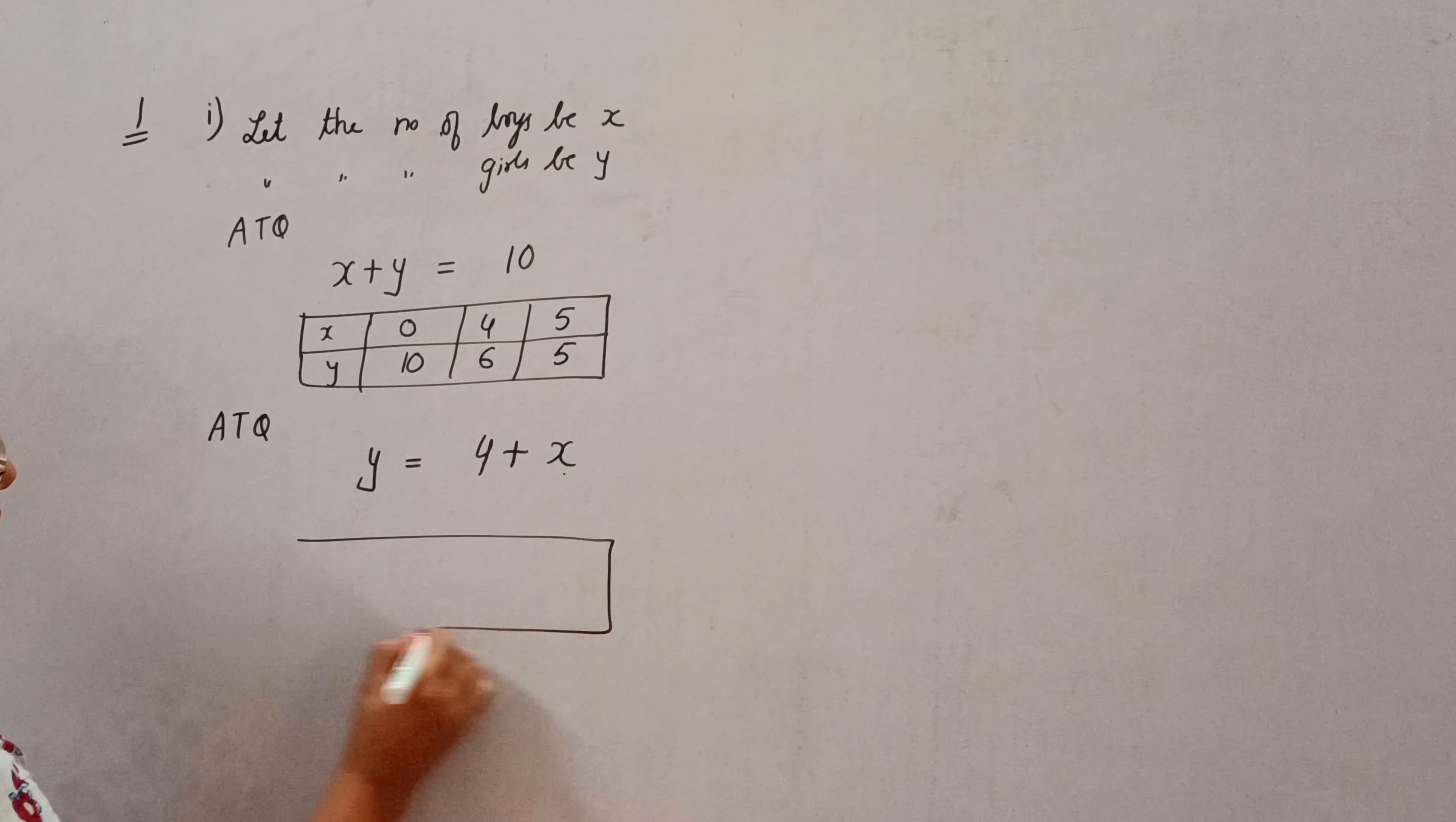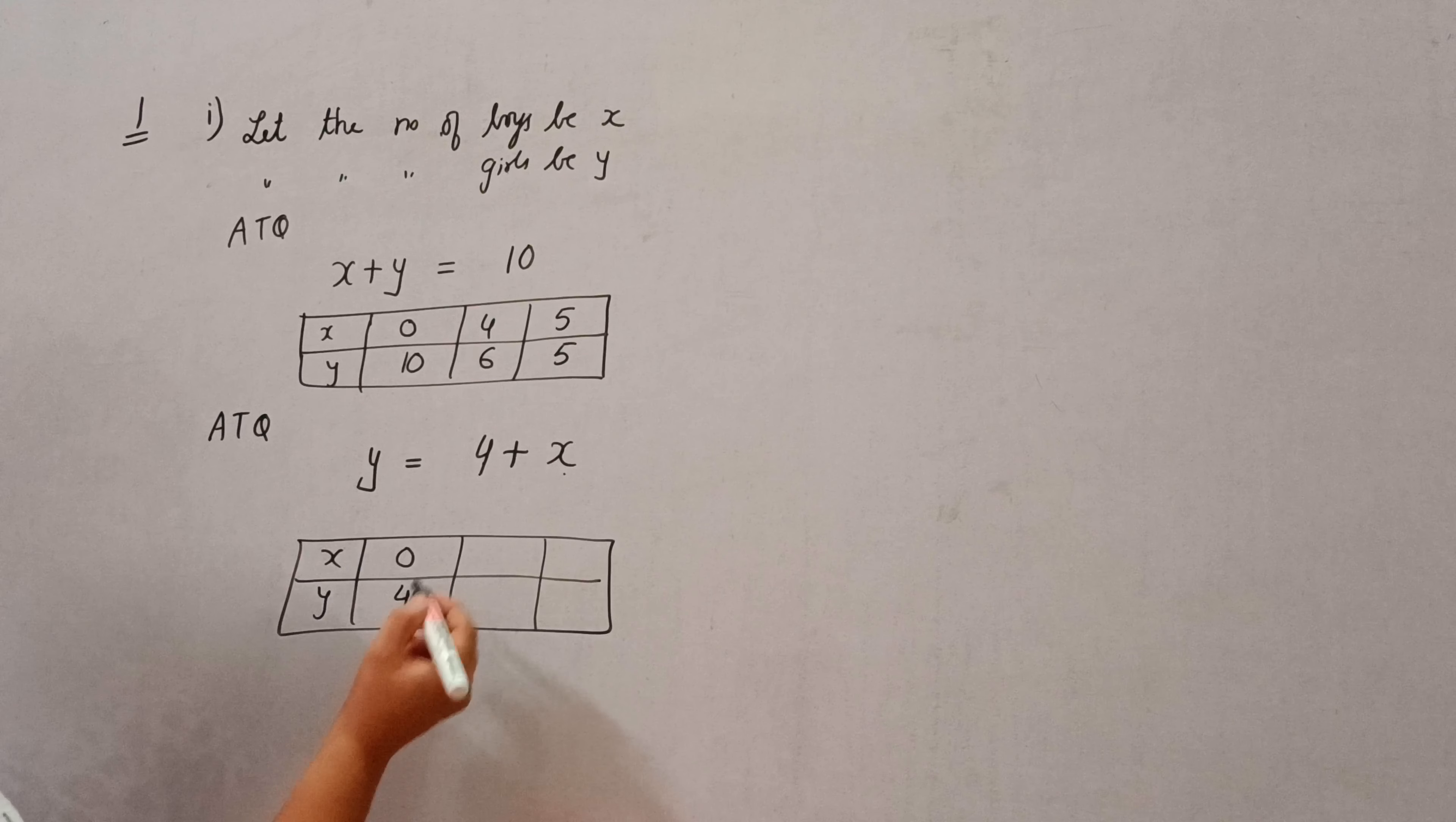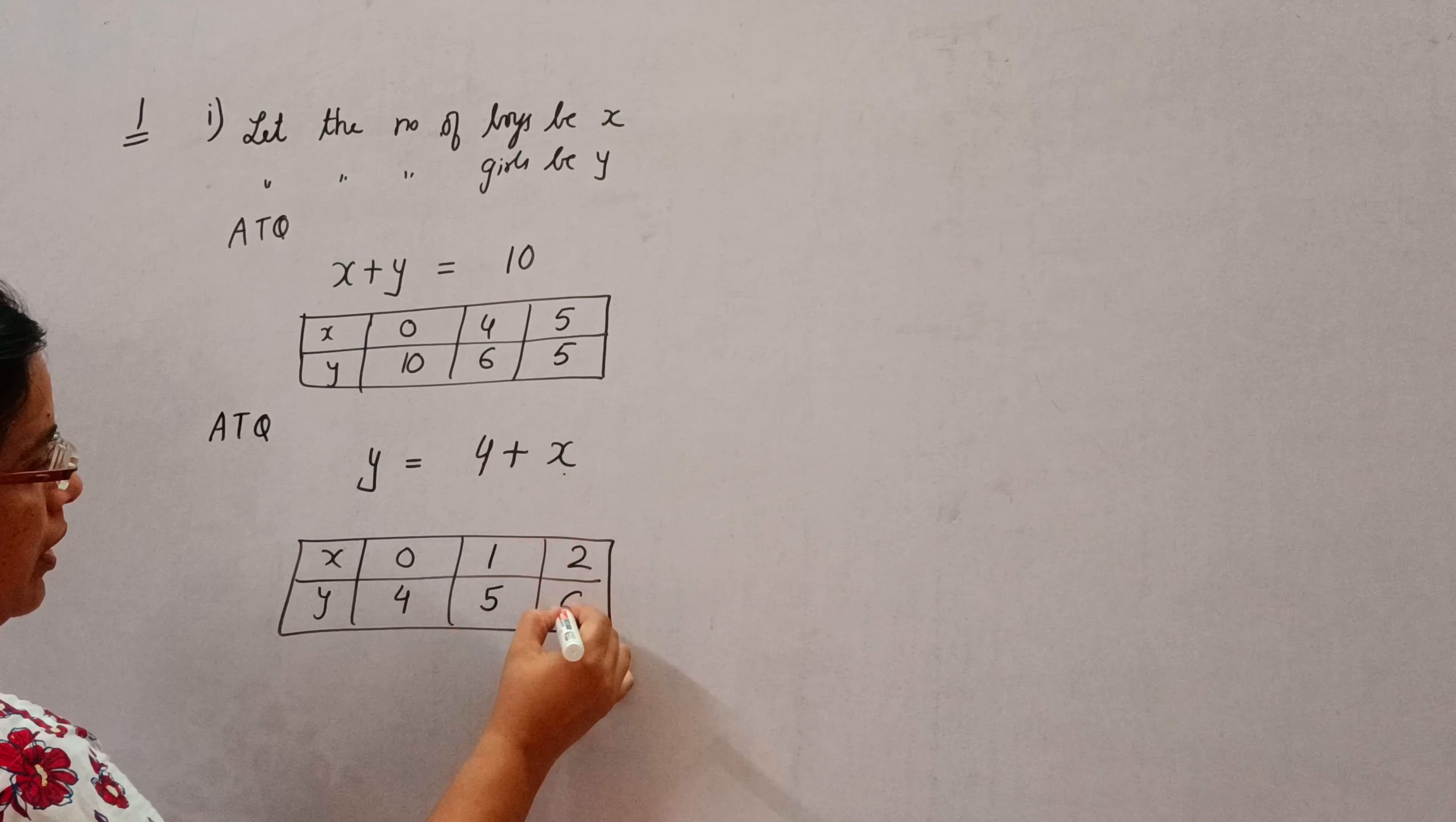In the same way we can make table for this. x is x, y. Now if I put the value of x 0, then y will become 4. If I put the value of x as 1, then y will become 5. And if I put the value of x as 2, then y will become 6.